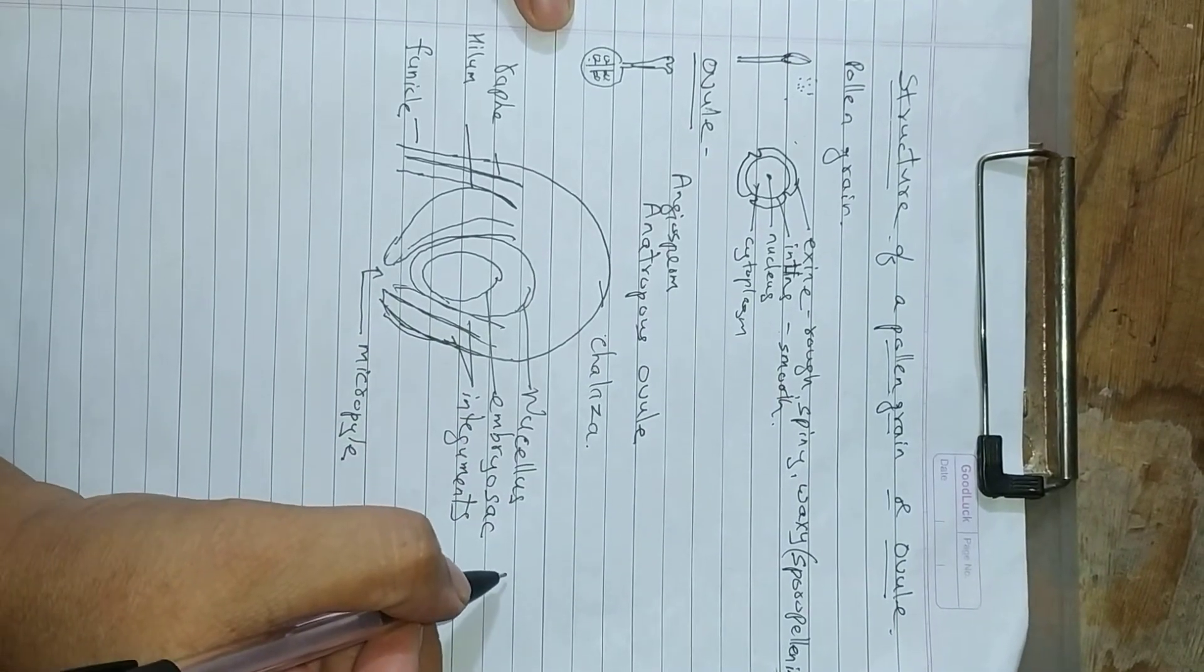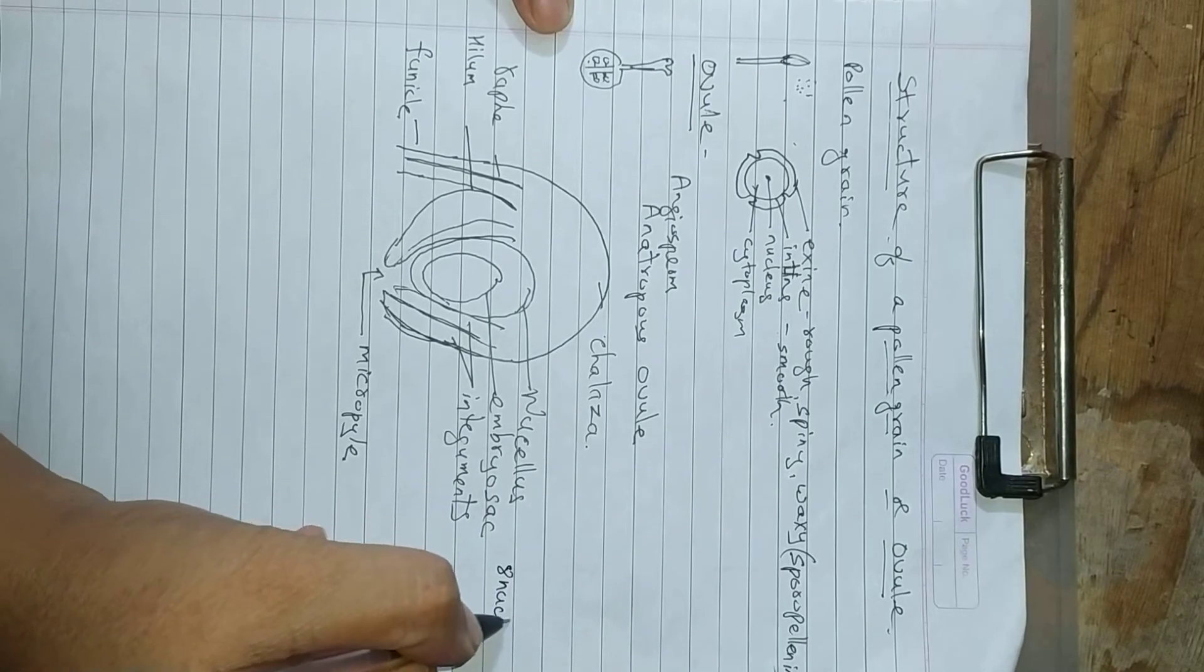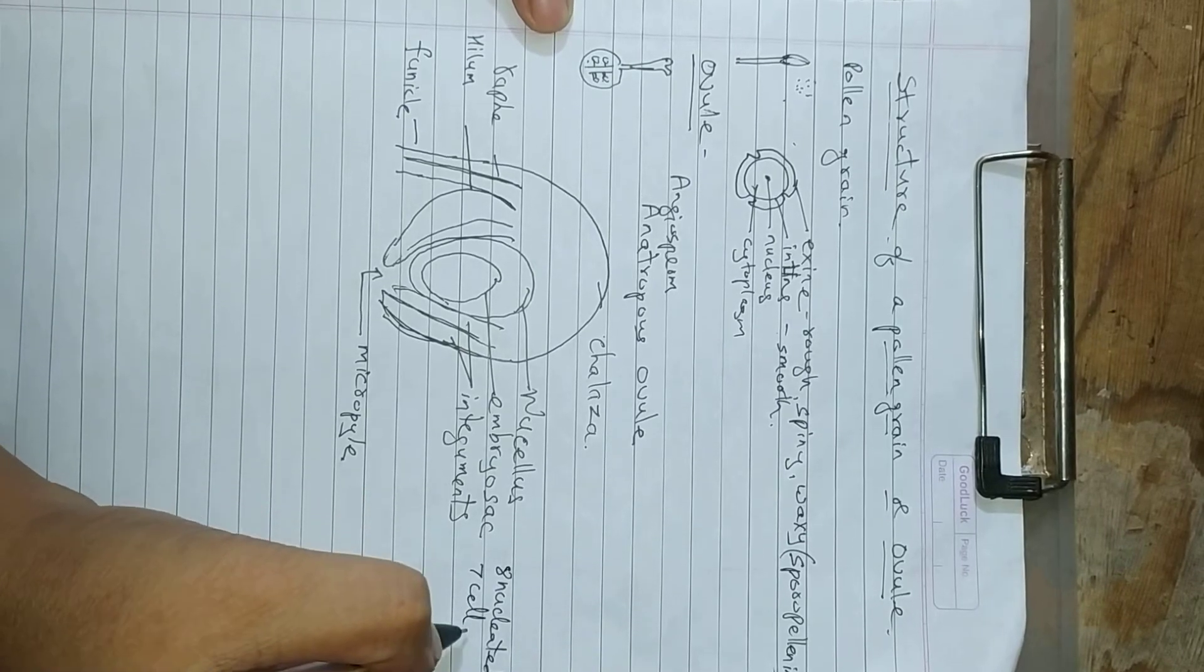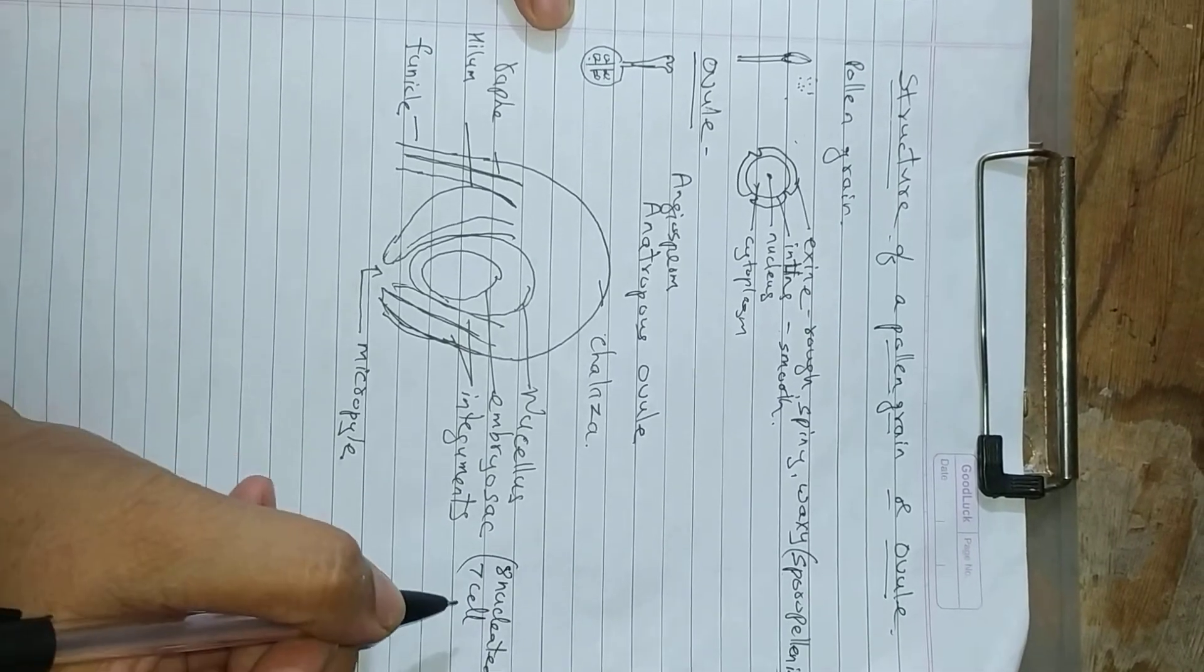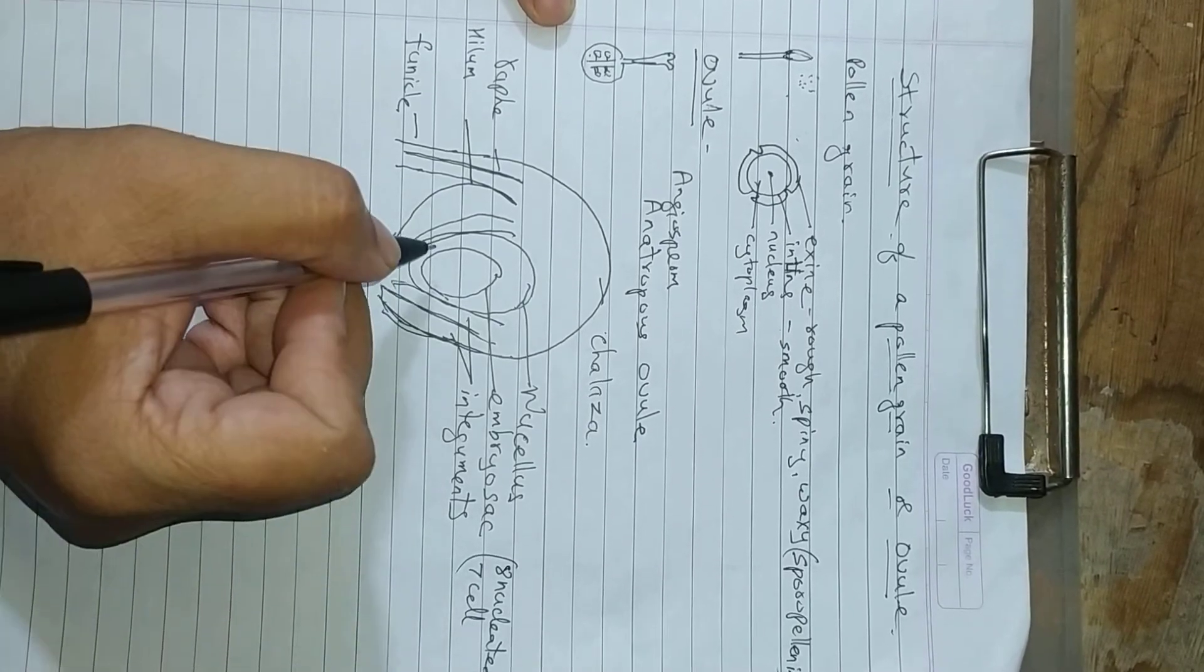Embryo sac is an 8-nucleated, 7-celled structure. It contains 8 nuclei and 7 cells. Let us see the embryo sac in detail.